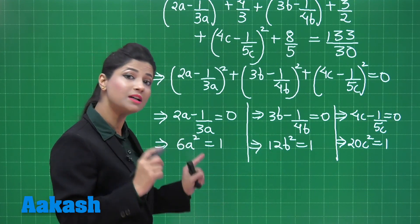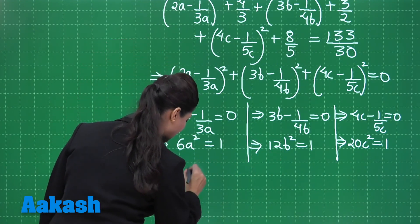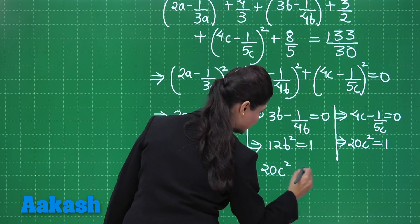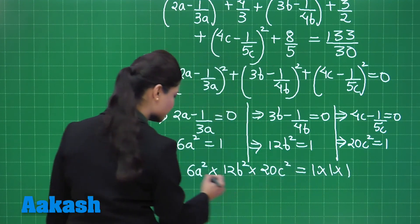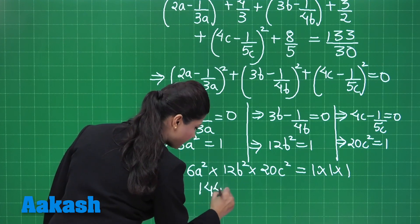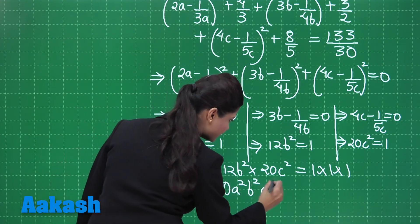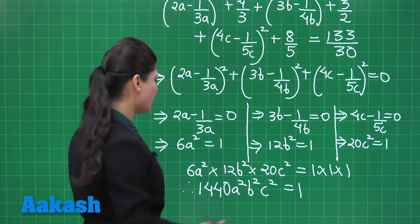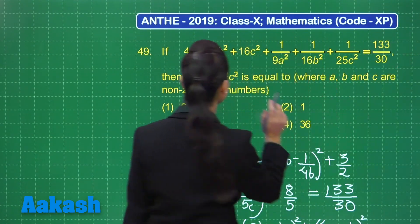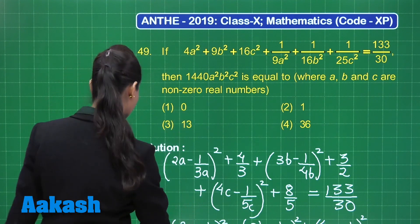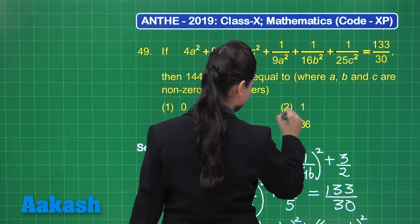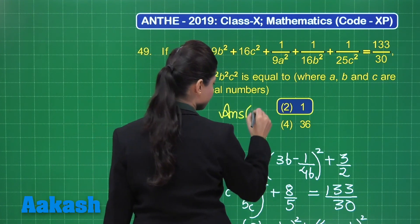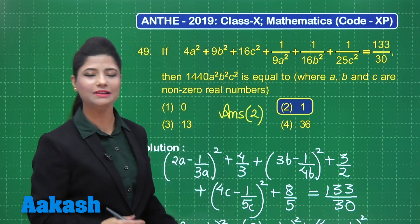From 4c − 1/5c = 0, simplifying gives 20c² = 1. Multiplying these three equations: 6a² × 12b² × 20c² = 1 × 1 × 1. The product of the three coefficients gives 1440a²b²c² = 1. Therefore the value of 1440a²b²c² is 1, which is option number 2.